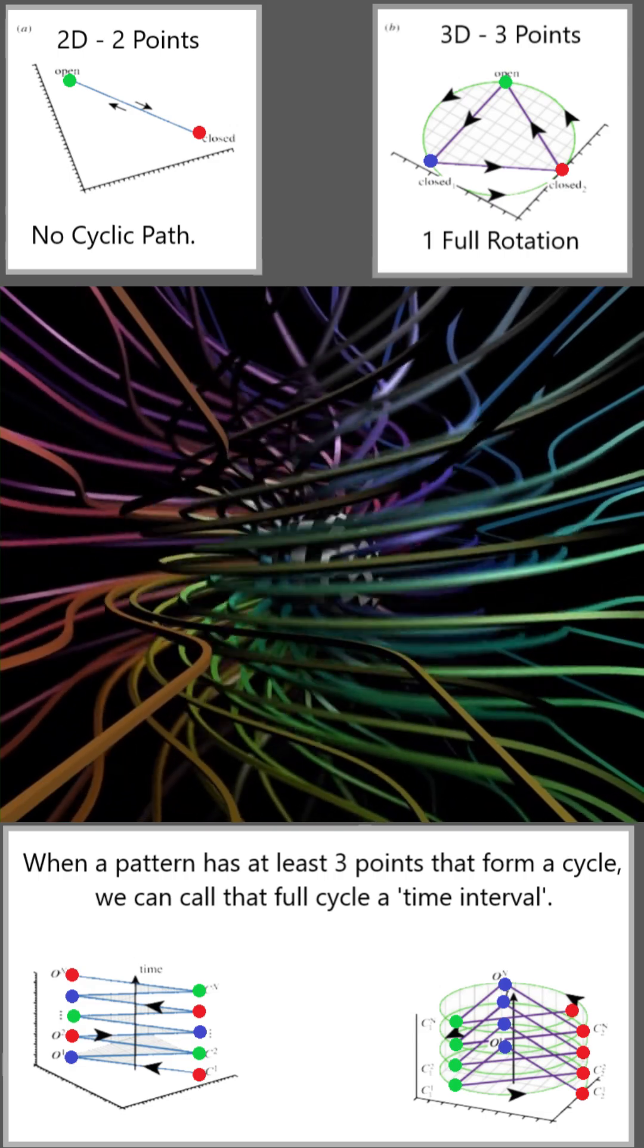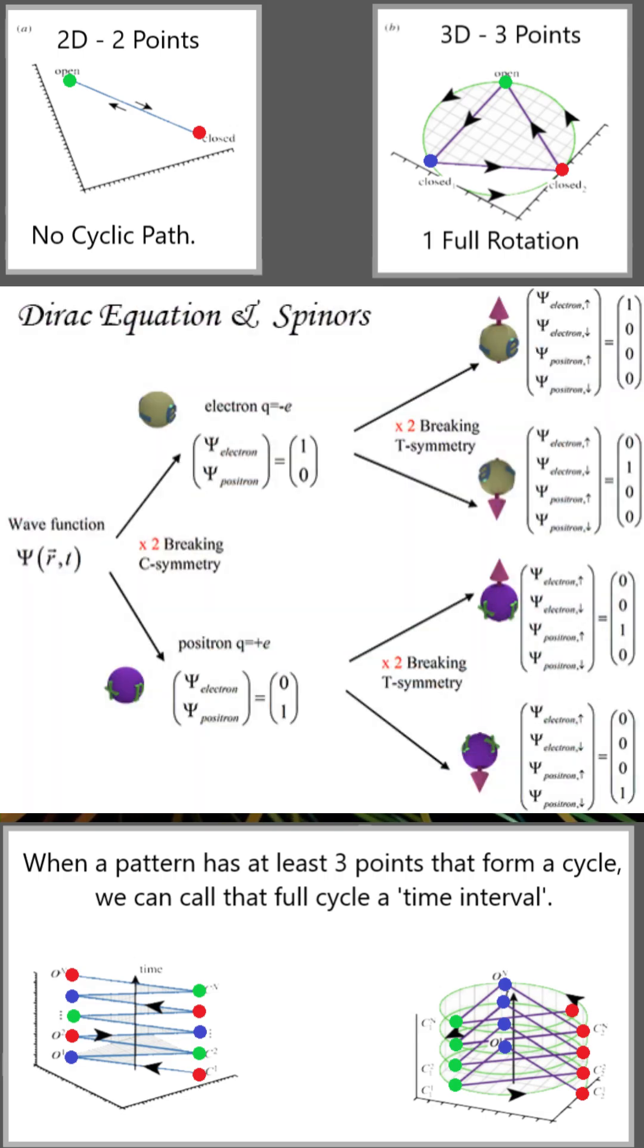In relativistic settings, like the Dirac equation, we use four-component Dirac spinors, which also account for particles and antiparticles.